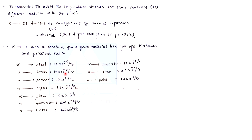Brass is 19, diamond is 1, and copper is 17. The highest alpha value is aluminium at 23.5. This is also important.